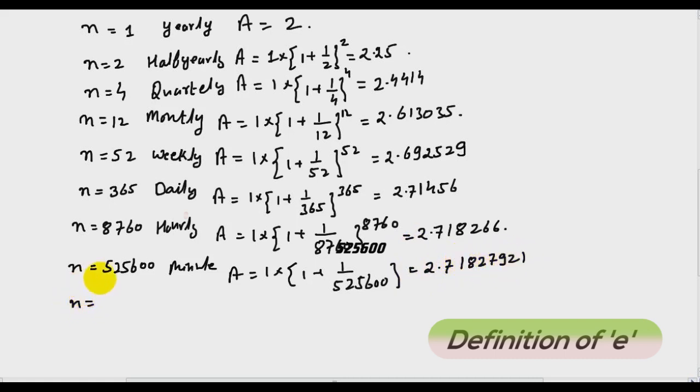And if n becomes every second, then there are approximately 31 million seconds in a year. So it will be A is equal to 1 into 1 plus 1 over 31 million raised to power 31 million, and I will get 2.71828247.